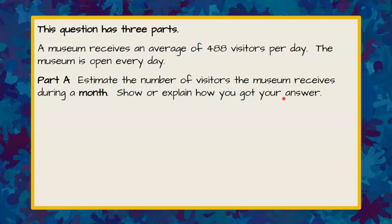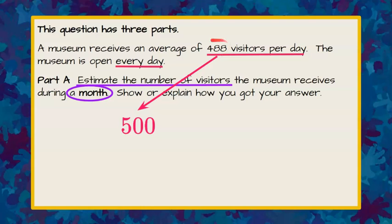Welcome back. So we are estimating the number of visitors that the museum receives in a month. To do this we need to understand that the museum gets 488 visitors per day on average. We're going to estimate the 488 to be 500 visitors because when we're estimating we want to make things easier.